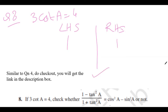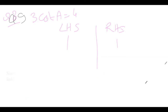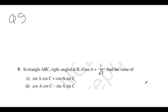Moving on to question number 9 — if you want the solution to question 8, comment in the comment box and I'll make a separate video. Question 9: In triangle ABC, right angle at B, meaning it is a right-angle triangle.